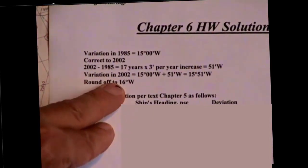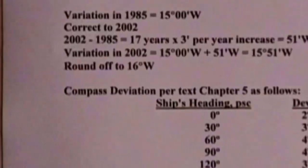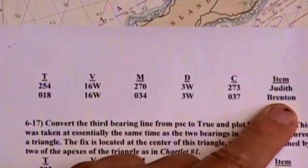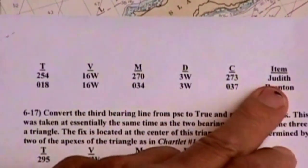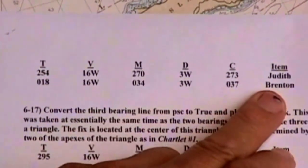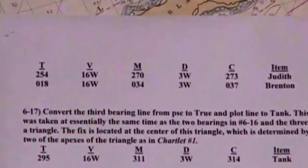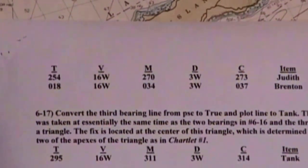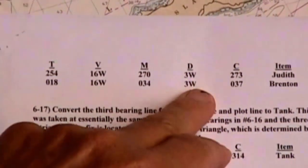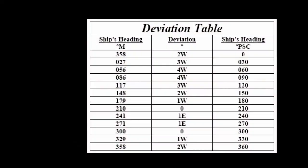So 16 degrees west is what we use in our TVMDC formula. Now let's take these two bearings and go to TVMDC. I've written out here 'Judith' and 'Breton' to identify the two bearings. We took a bearing of 273 on Point Judith and 037 on Breton — these are in PSC. The deviation we're going to use is based on the boat heading, not the bearing. The boat heading is 120 PSC, so we enter the deviation table at 120 and get three degrees west.